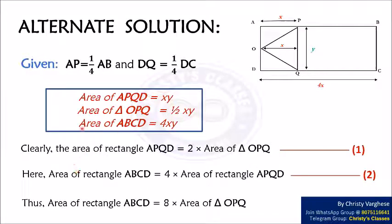Again, area of rectangle ABCD is equal to 4 times the area of rectangle APQD. Let this be equation 2. Now substituting equation 1 in equation 2 we get area of rectangle ABCD is equal to 8 times the area of triangle OPQ.